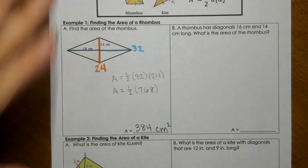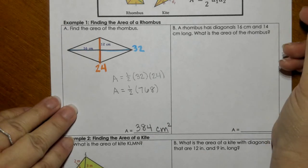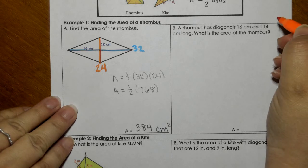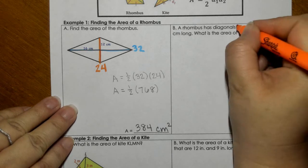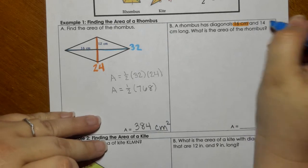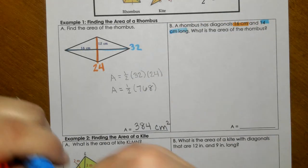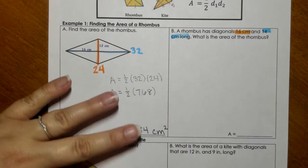In part B, it gives us that the rhombus has a diagonal of 14 centimeters and 16 centimeters. So there's your two diagonals. What is the area? Well, let's plug it in.